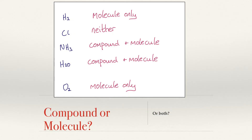For instance, H2 contains only one type of element and two atoms, therefore it must only be a molecule. Chlorine has only one element and only one atom, therefore it is neither a molecule nor a compound. Whereas NH3 and H2O both contain more than one type of element and more than one atom, therefore they are both a molecule and a compound. Oxygen gas again contains one type of element and two atoms, therefore it is only a molecule.